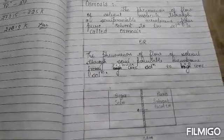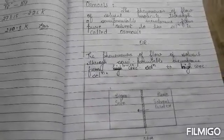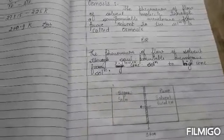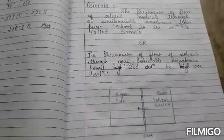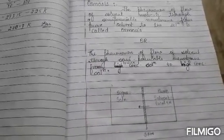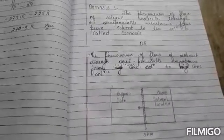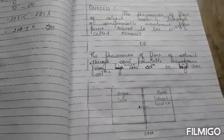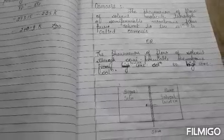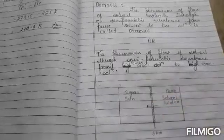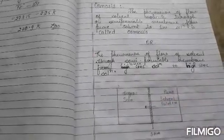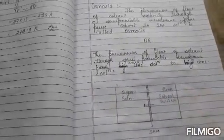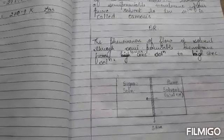Semi-permeable membranes are basically of two types: one is natural and the other is artificial. The semi-permeable membrane allows solvent molecules to pass through it, but not solute molecules. So we will understand osmosis now.